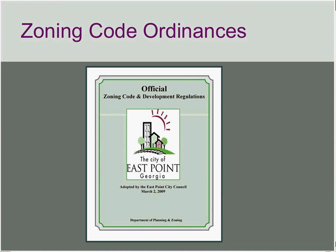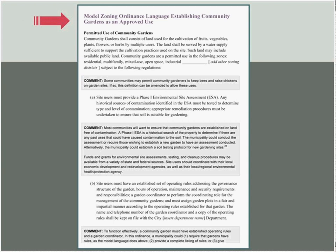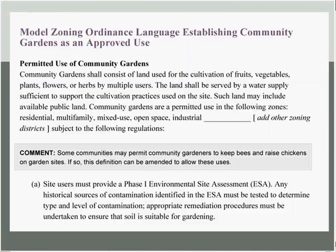Now we're going to talk about NPLAN's zoning code ordinances. We define a community garden as land used for the cultivation of fruits, vegetables, plants, flowers, or herbs by multiple users. We say the land needs a water supply and could be public land. And then we say community gardens are a permitted use in certain types of zoning districts, subject to certain regulations.